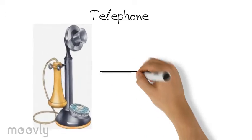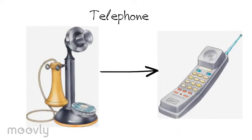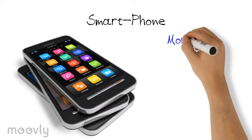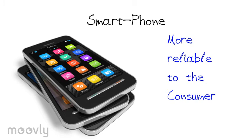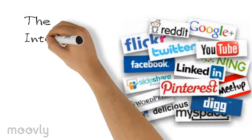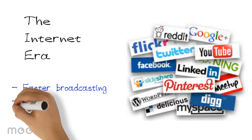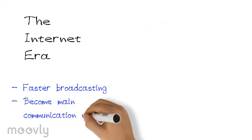Man then invented the telephone. Telephones have been transforming from old-fashioned cell phones to the well-known smartphones of today, which are more reliable to consumers. Then the internet was introduced, and faster broadcasting waves changed the way people use the internet as the main communication method.